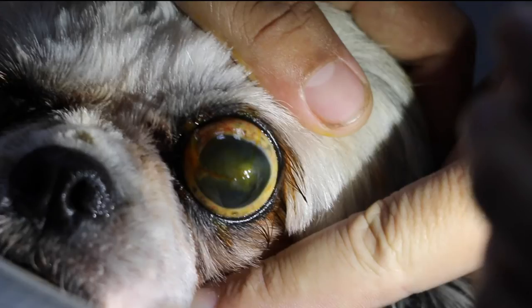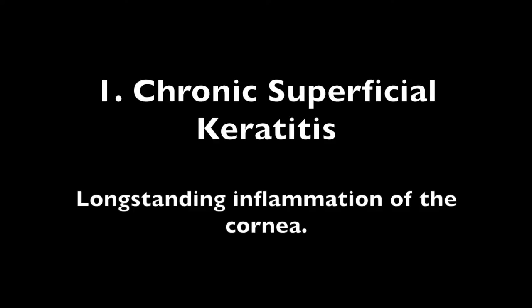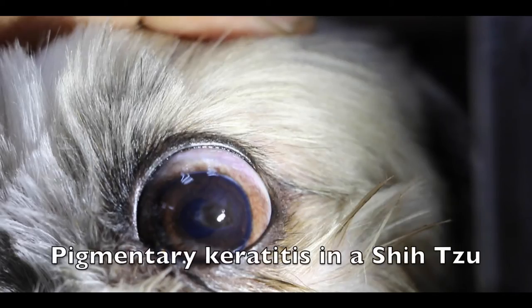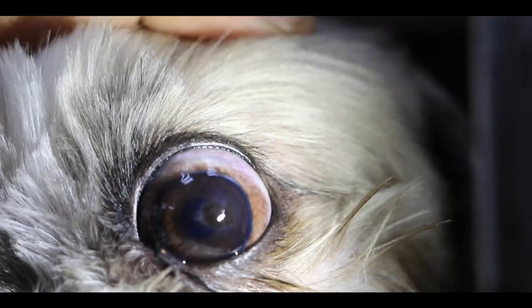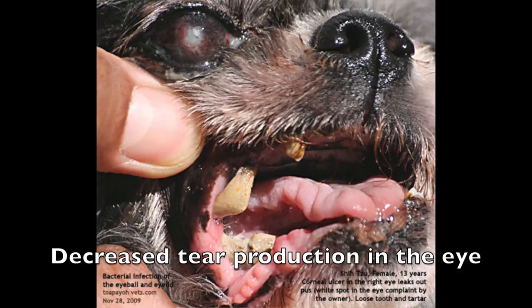In this photo, we see that the dog's cornea is cloudy but does not retain fluorescent stain — this dog has non-ulcerative keratitis. Causes include chronic superficial keratitis, which is a long-standing inflammation. Pigmentary keratitis is caused by eye problems particular to brachycephalic or short-headed dogs, leading to corneal overexposure and brown pigmentation. Keratoconjunctivitis sicca (KCS) involves abnormal tear production resulting in dry eyes that cause corneal inflammation.